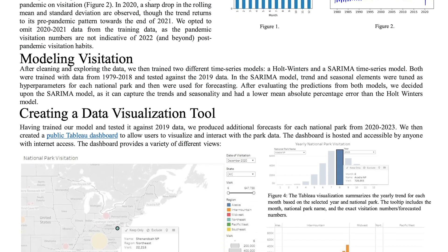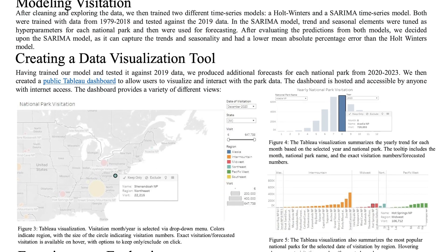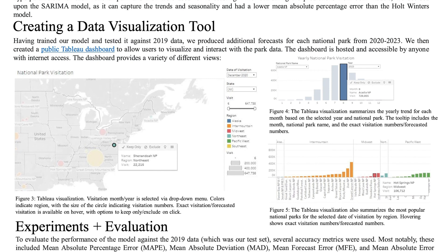To create the interactive visualization, we hosted a Tableau dashboard that allows users to select visitation dates and filter by region, number of visits, or state. Parks are represented on the map by circles colored by the park's region, with higher visitation equating to larger circles. There is also a summary of the most popular national parks by region for a selected month and year. An additional view allows you to view the yearly trend, broken down by month, for a selected park and year.